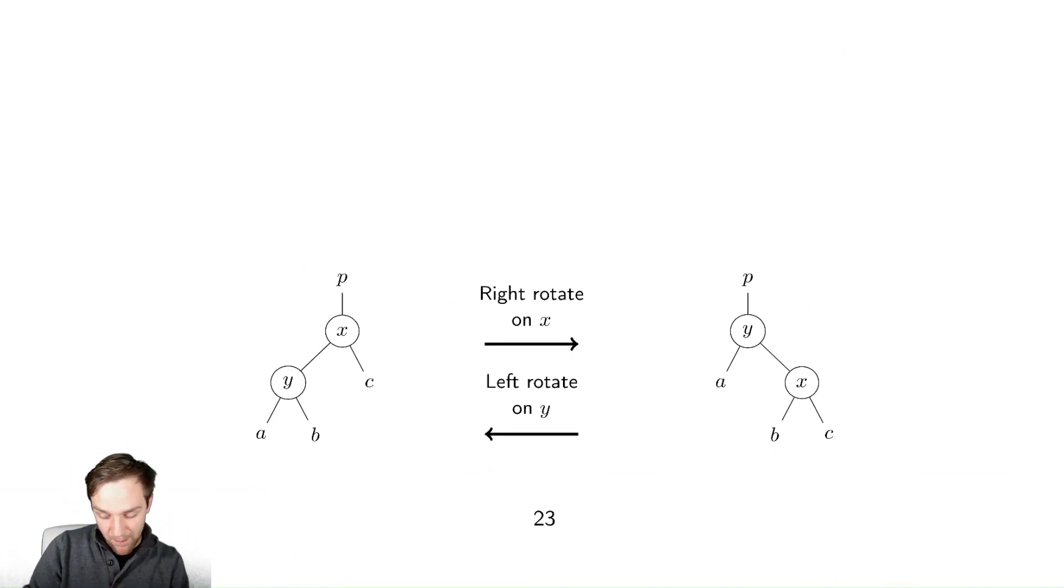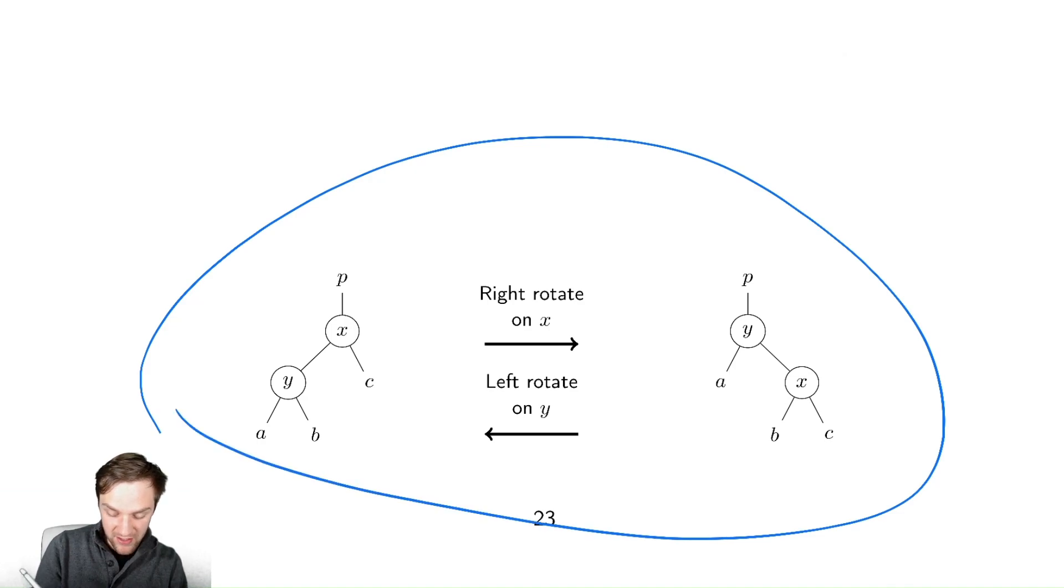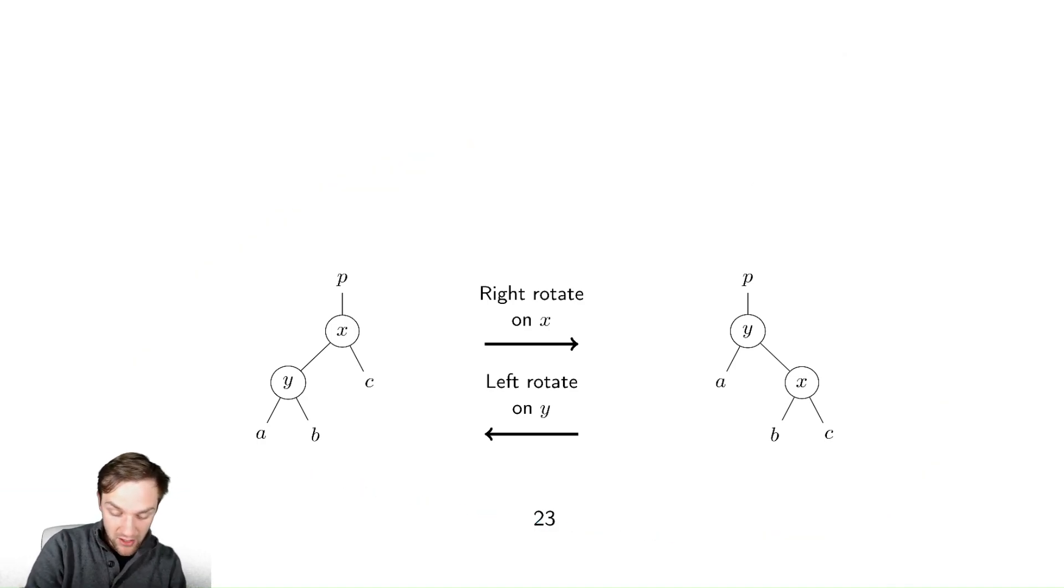Here we've simulated both of the rotations in a single picture. So here if I'm rotating right on x, I'm going to move x down to be the right child of y. x becomes the right child of y. I keep whatever was on the right of c, that's going to hang around, but I'm going to move the previous right child of y to be the left child of x.